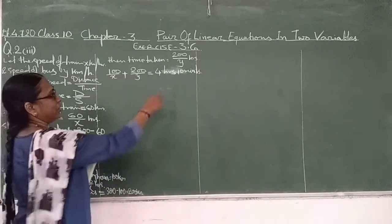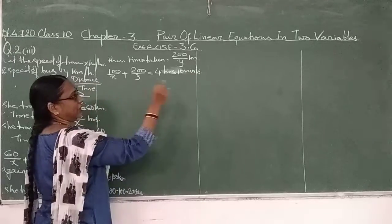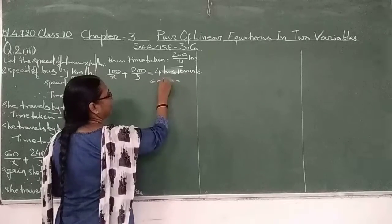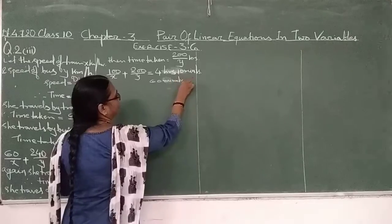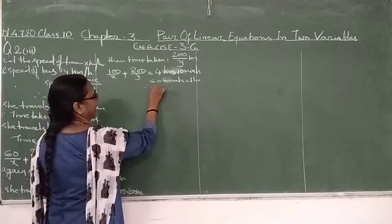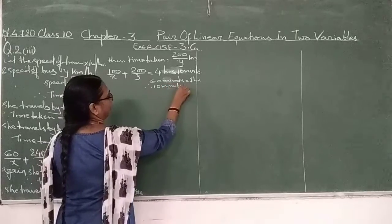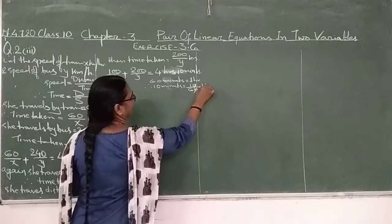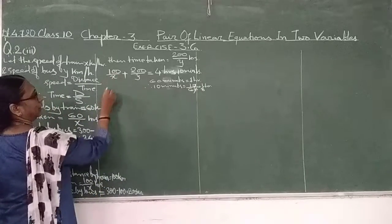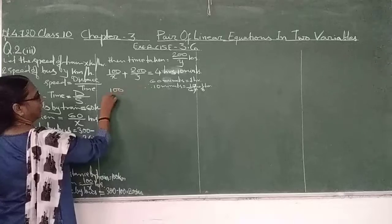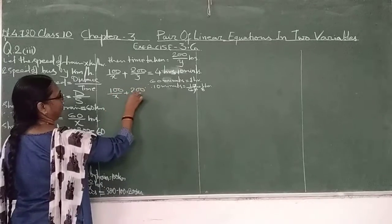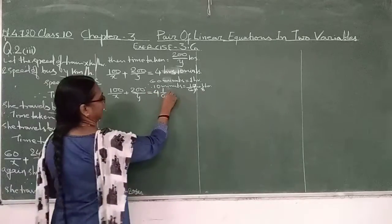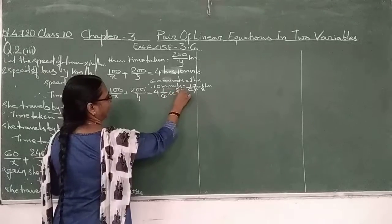We convert 10 minutes into hours. We know 60 minutes equals 1 hour, therefore 10 minutes equals 10/60, that is 1/6 hours. So the equation is: 100/x + 200/y = 4 + 1/6, that is 25/6.